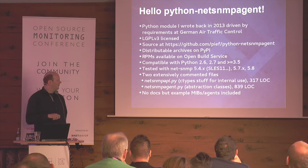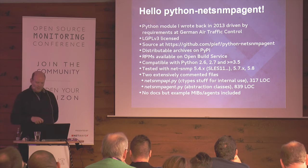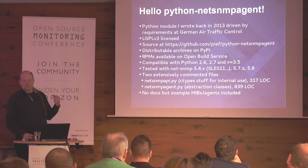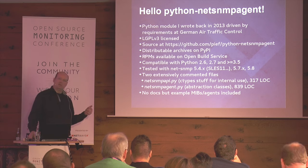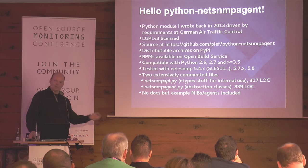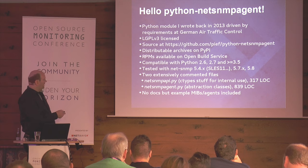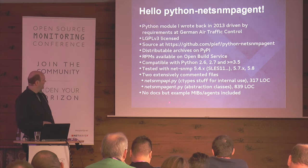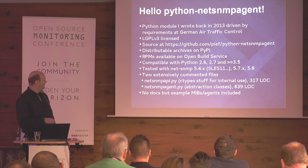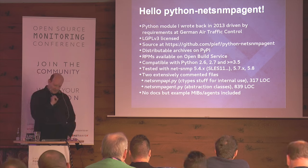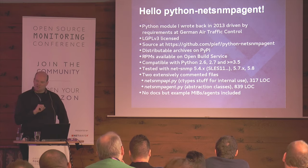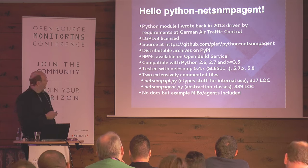It consists of two extensively commented files. There is netsnmp_api.py, which has ctypes stuff for internal use — I had to redefine things from C header files in Python, which comes to about 370 lines of code. Then there is the NetSNMP agent file, which is the abstraction class you actually import. I don't have docs yet, but I have example MIBs and agents included which teach you very well.